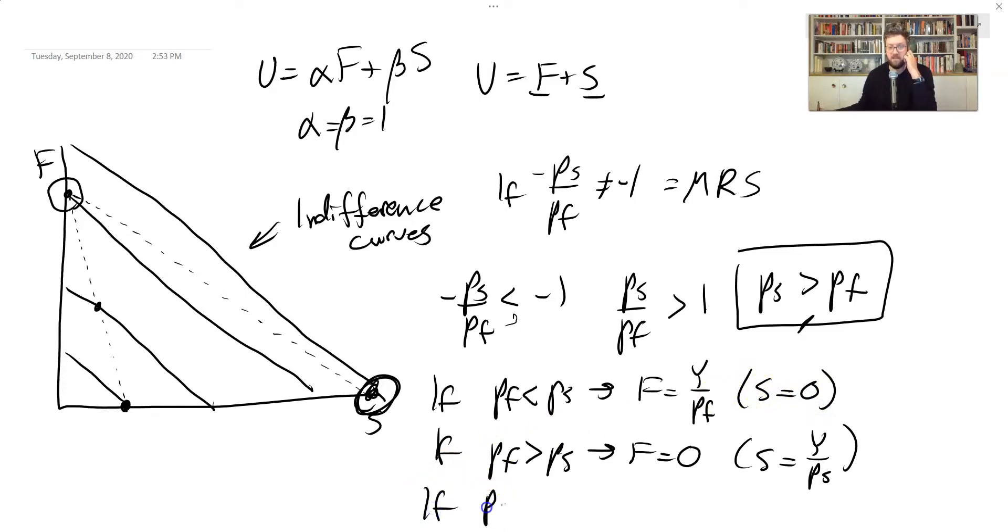What happens if they're on the knife edge where they're just equal to each other? Then F is undefined, right? Any value of F that's drawn from the interval zero to Y over PF is equally good. So this is a notation for saying F is somewhere between zero and Y over PF, which just means that you're spending some of your money on F. It could be zero. It could be all of it. It doesn't matter because it gives you the same utility as shelter, and it costs the same as shelter. So it's like you don't even distinguish between the two.